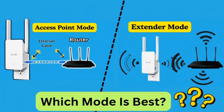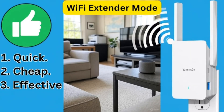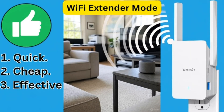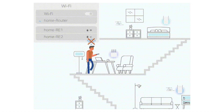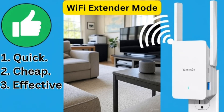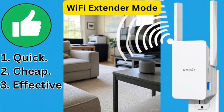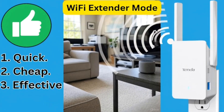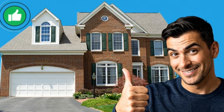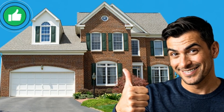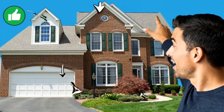So which mode should you use? If you own a small apartment, then wireless extender or repeater mode is usually fine — quick, cheap, and effective for minor dead zones.